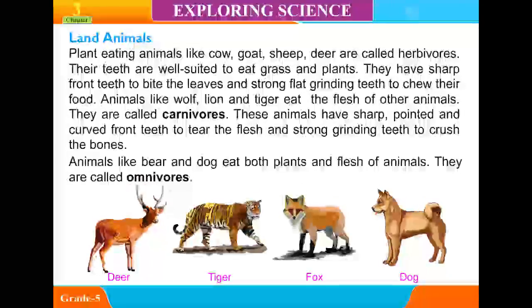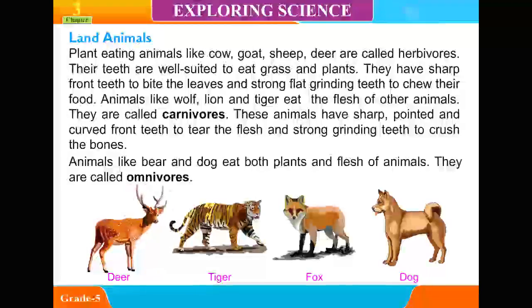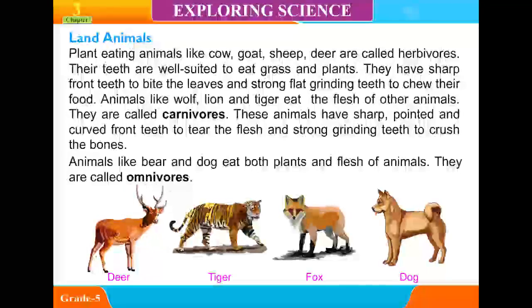Animals like bear and dog eat both plants and flesh of animals. They are called omnivores.